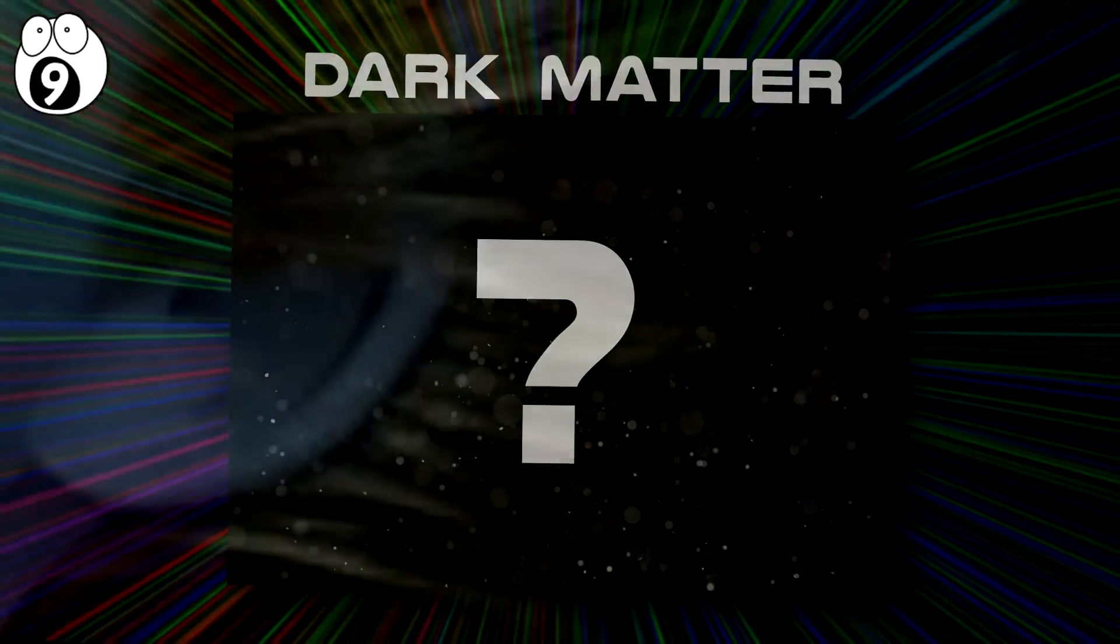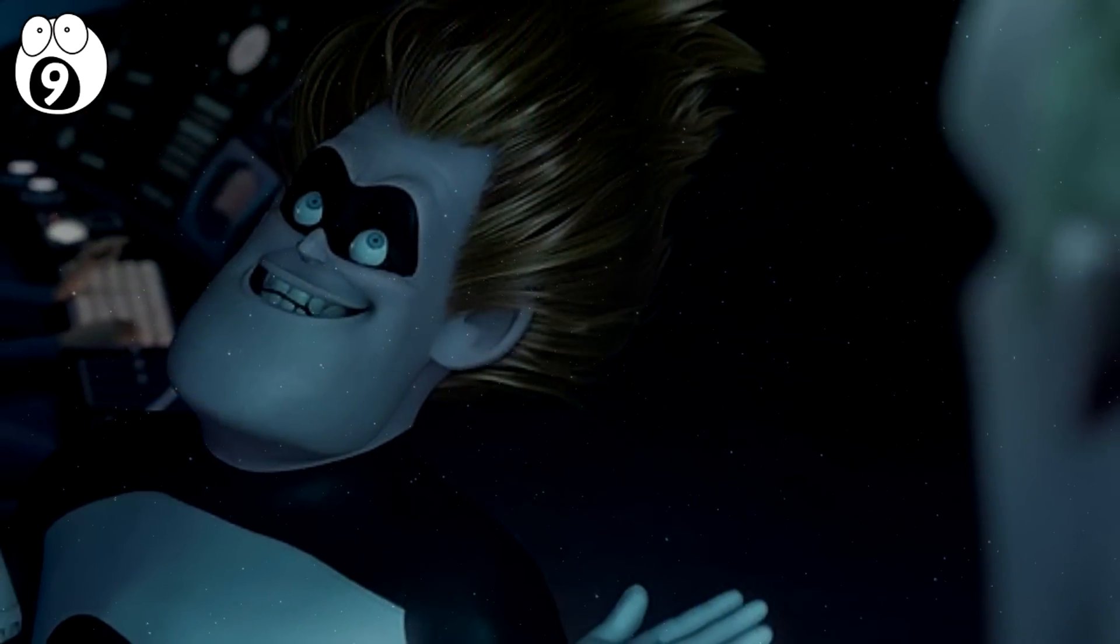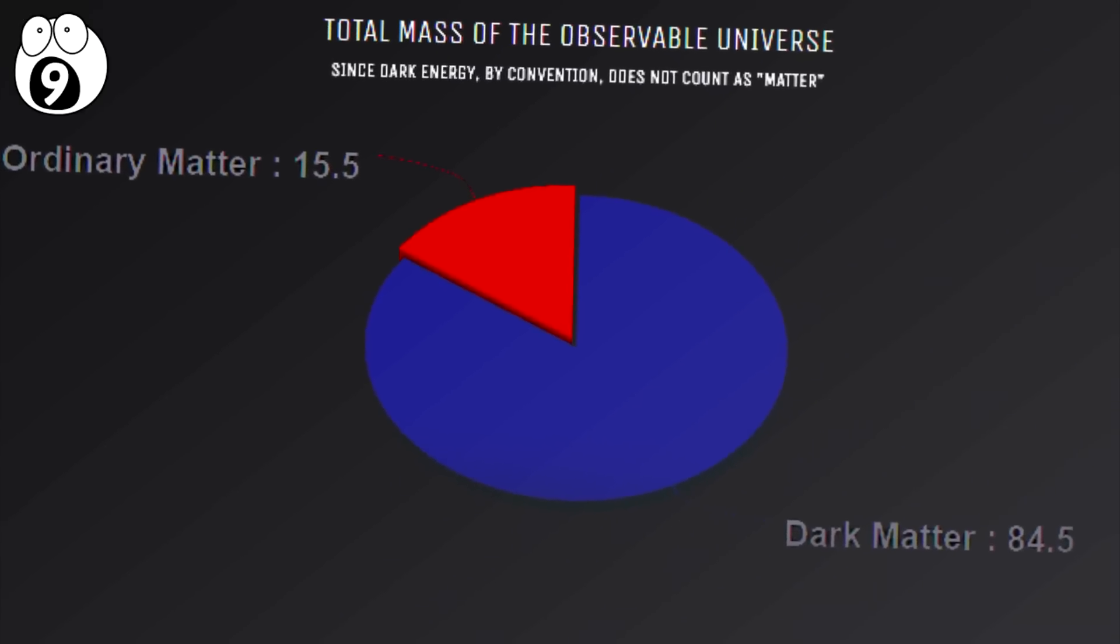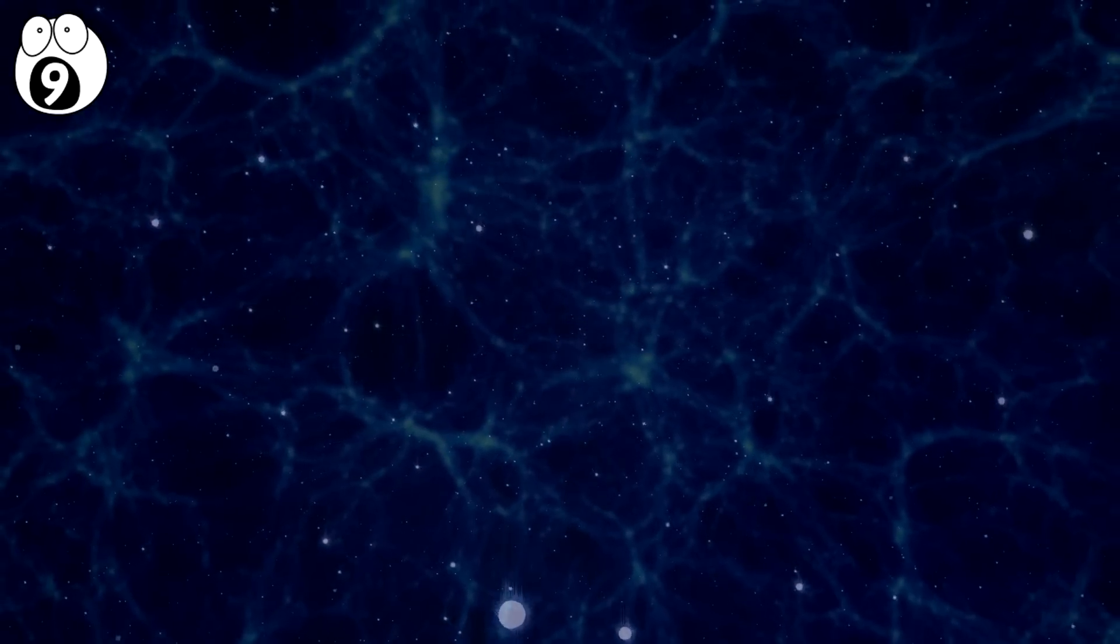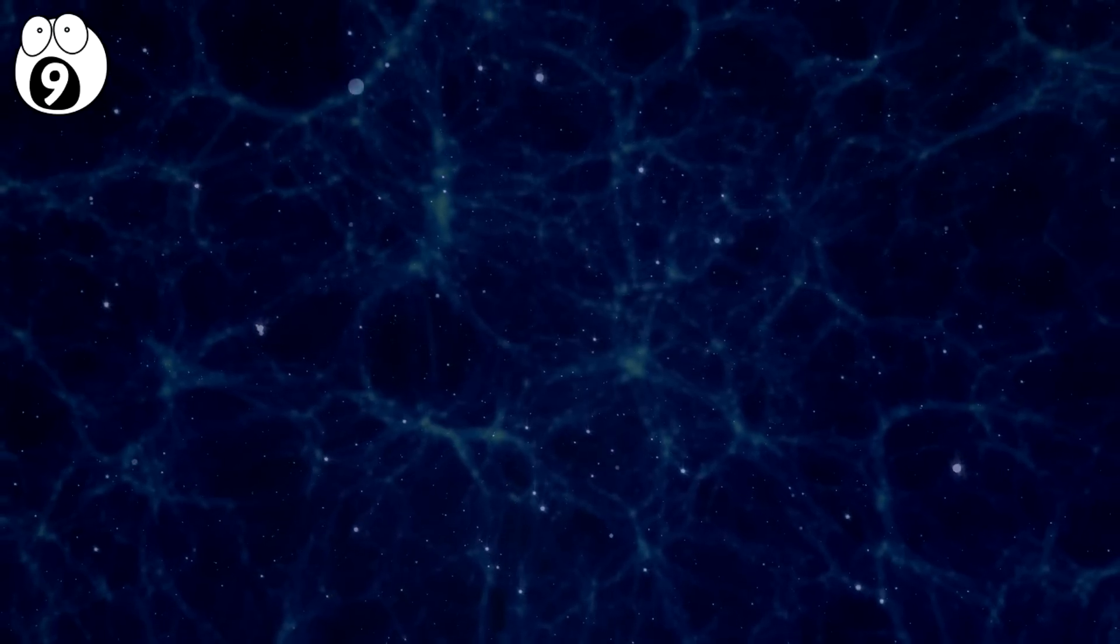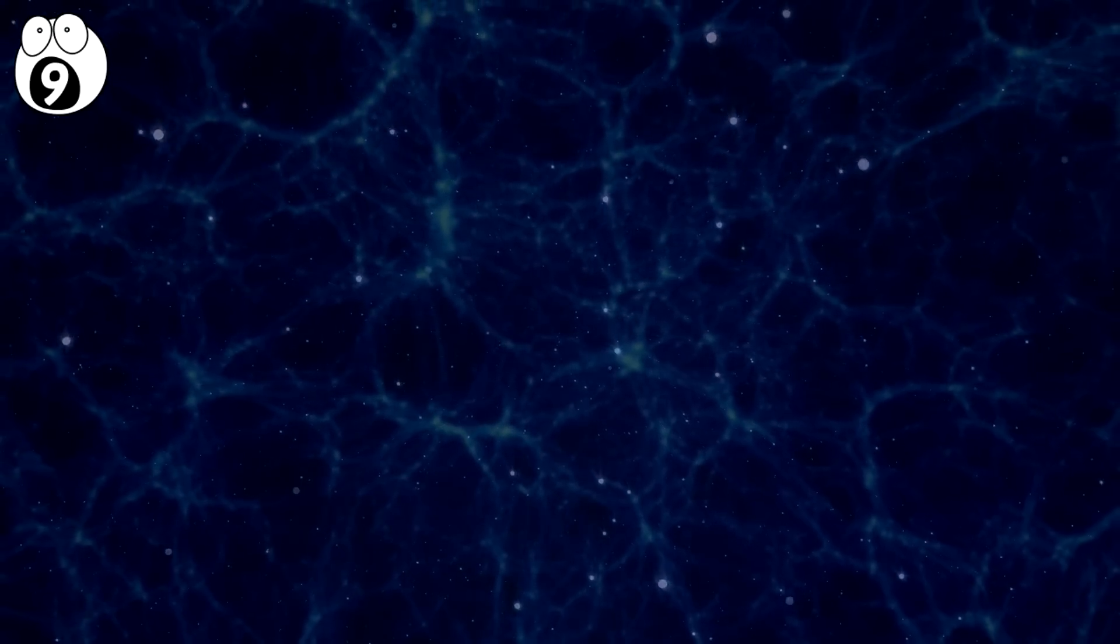Sounding like some supervillain's secret weapon, Dark Matter refers to a type of matter that takes up 84.5% of mass in the observable universe. Dark Matter cannot interact nor can it emit electromagnetic radiation, which essentially makes it invisible to us.